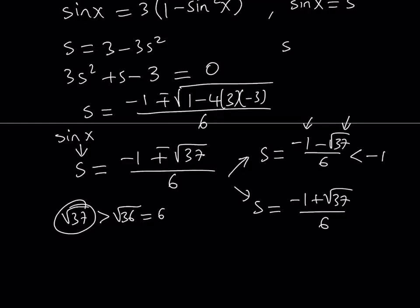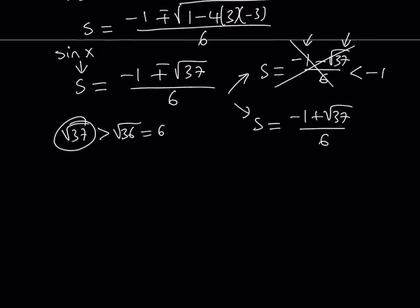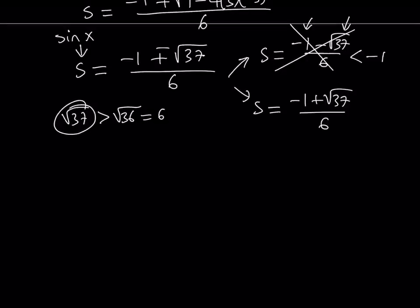But that doesn't matter. We know that this quantity is less than negative 1. So it doesn't count because sine of x cannot be less than negative 1. Due to the fact that sine x needs to be between negative 1 and 1 inclusive. So this solution is not valid. We end up with the other solution. Is that solution okay? Let's check.